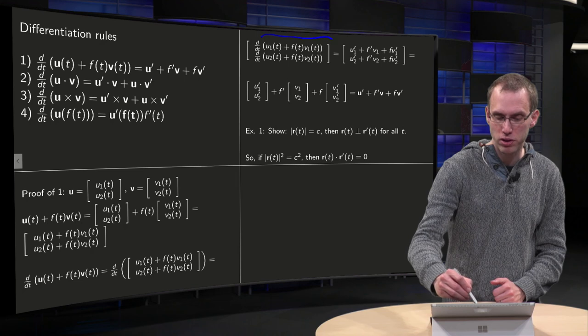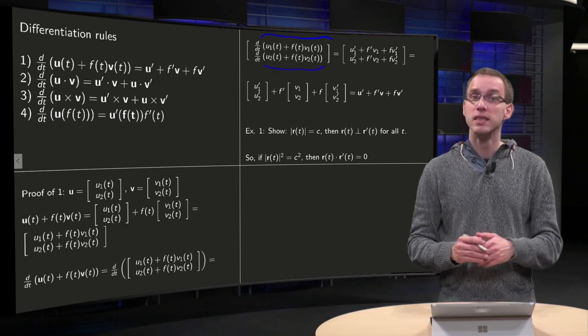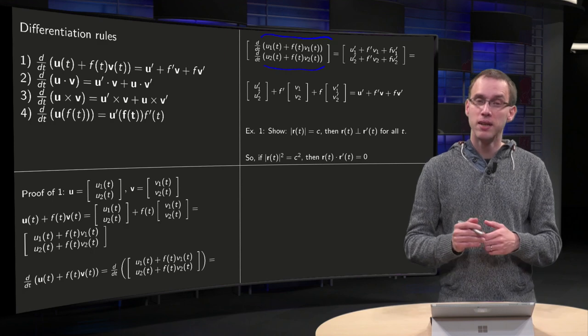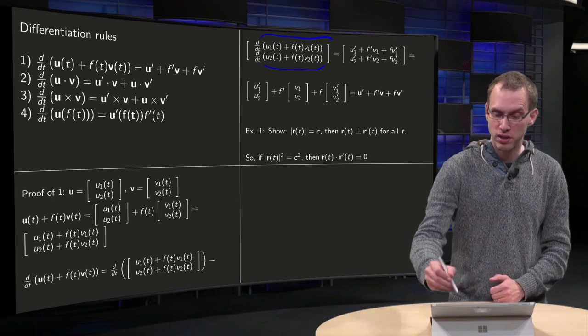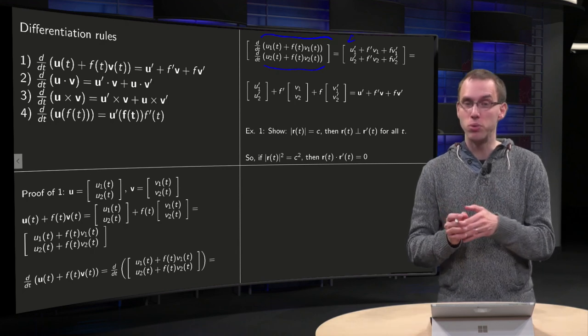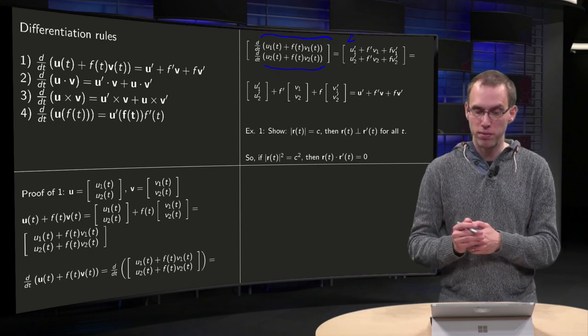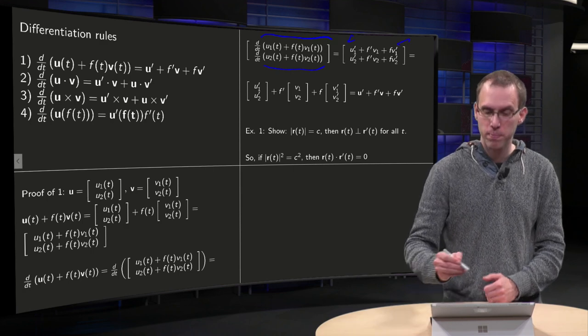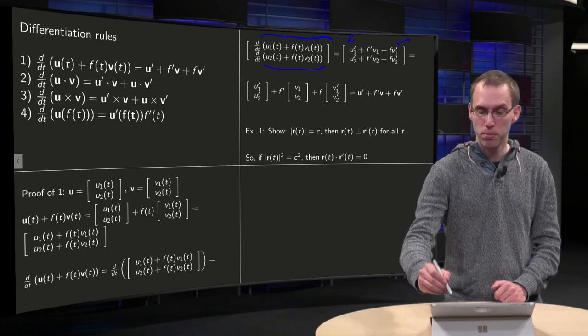And now we have normal scalar functions, so we can compute the d/dt. We have the normal linearity, so we get u1 prime and the d/dt of f times v1 equals f prime times v1 plus f times v1 prime over there. Similarly for the second component.